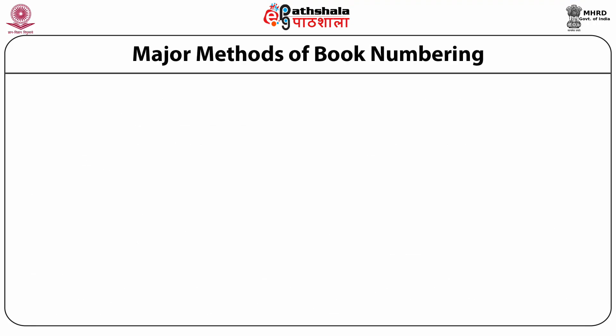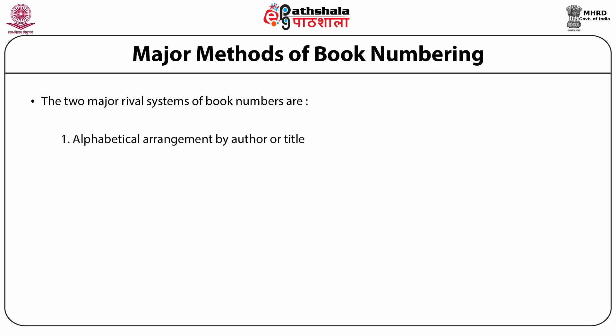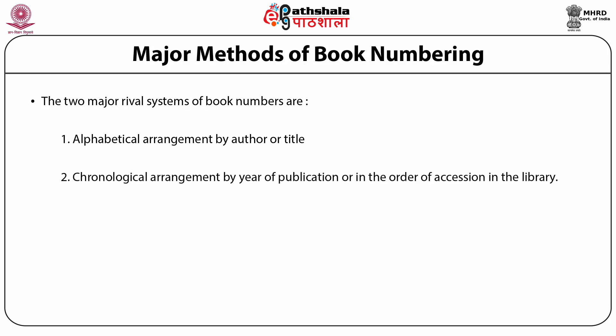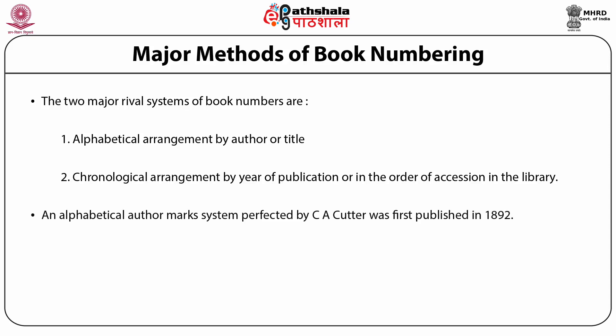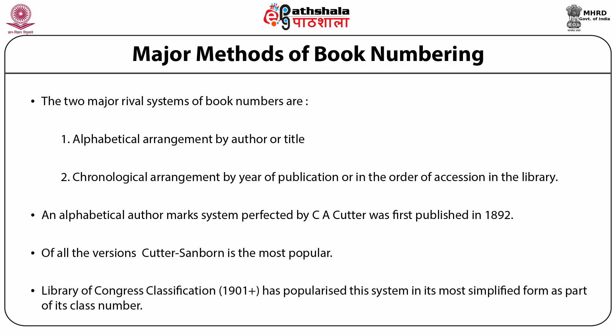The two major and rival systems of book numbers are: alphabetical arrangement by author or title of the document, and chronological arrangement by year of publication or in the order of accession in the library. An alphabetical author mark system perfected by C.A. Cutter was first published in the year 1892. Of all the versions, Cutter-Sanborn is the most popular author table. Library of Congress classification, first published in 1901, has popularized the system in its most simplified form as part of its class number.